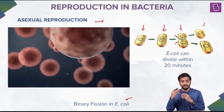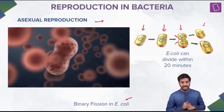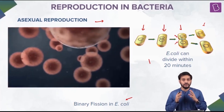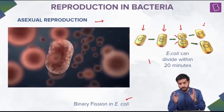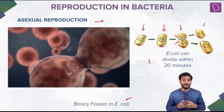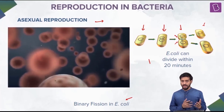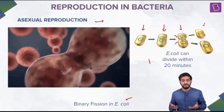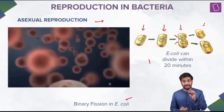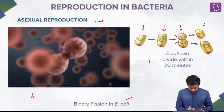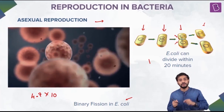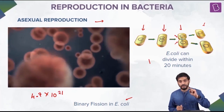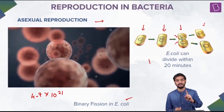One cell divides into two, and within 20 minutes a daughter cell becomes ready to undergo binary fission again. If there is one parent bacterium, within 24 hours - one full day - how many cells will be formed? The estimated number is about 4.7 × 10²¹ cells formed from one parent cell in 24 hours.